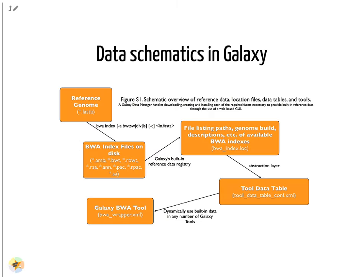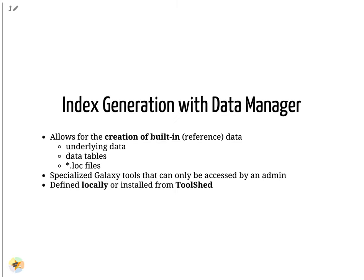Here is a more concrete example. A reference dataset is required as input. A tool, for example BWA, is used to build the index. The outputs are registered with Galaxy's data registry in a lock file. The tool data table XML file has a listing of all of the lock files. When a user runs the BWA tool, Galaxy knows where to find this reference data. Data managers are special tools in Galaxy — they create the reference data and update the lock files.